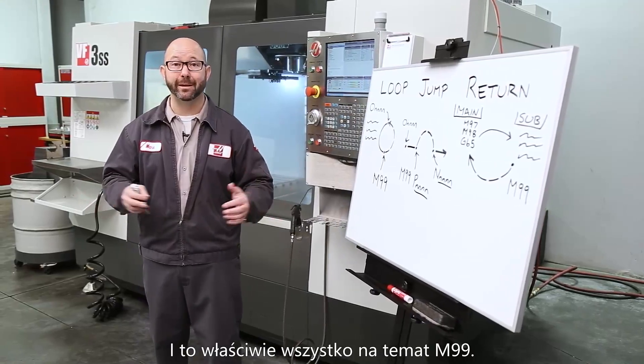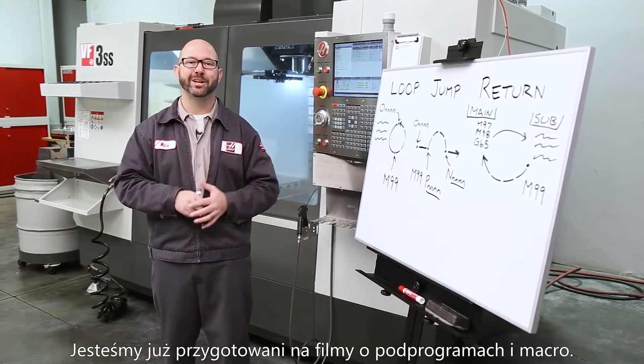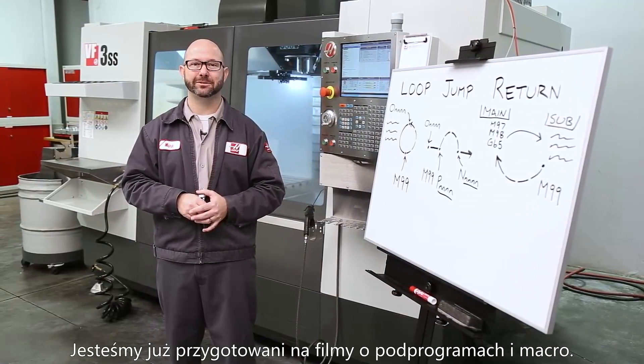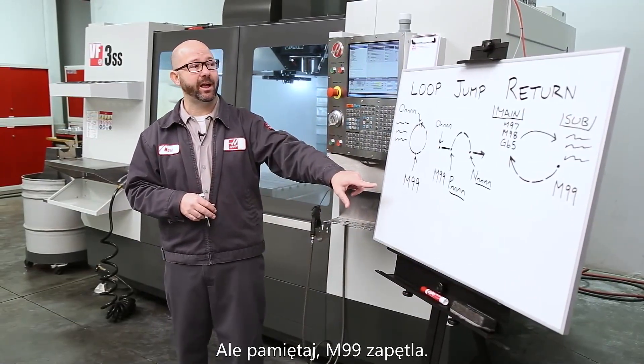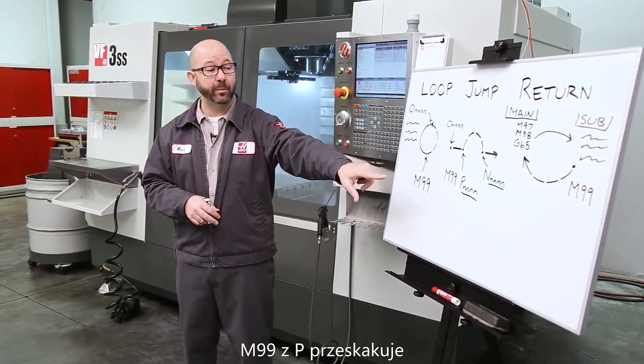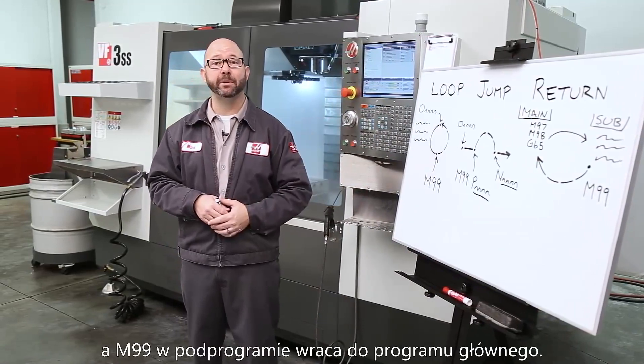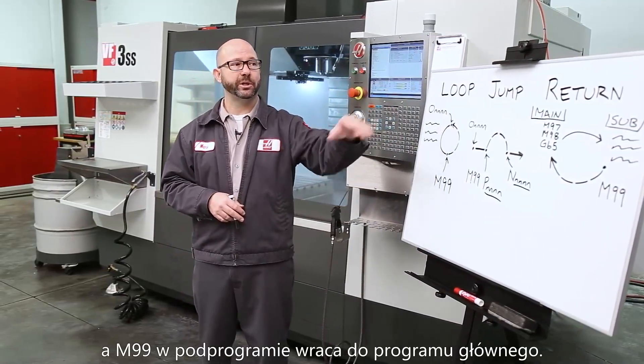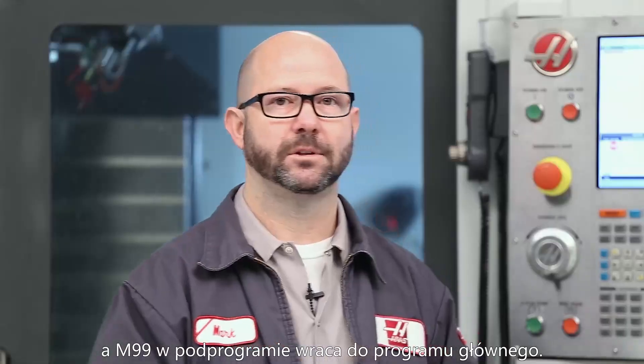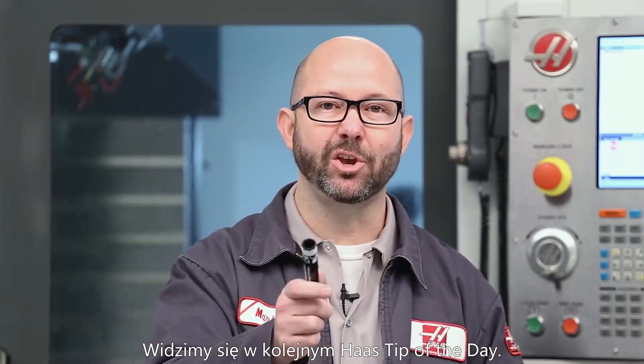That's just about it for our M99. Now we're all set for those sub program and macro videos. But remember, M99 loops, M99 with a P number jumps, and an M99 in a sub program returns us back to the main. Thanks for letting all of us here at Haas be a part of your success, and we'll see you on the next Haas Tip of the Day.